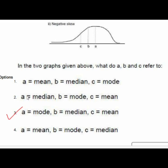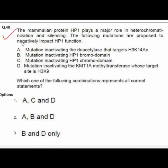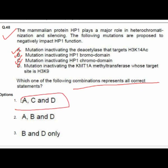Question 48: Mammalian protein HP1 plays a major role in heterochromatinization and silencing. Proposed mutations that would negatively impact HP1 function are given. Option 1 — A, C, D — is correct: A — mutation inactivating the deacetylase targeting H3K14Ac; C — mutation inactivating HP1 chromodomain; D — mutation inactivating KMT1A methyltransferase whose target site is H3K9.